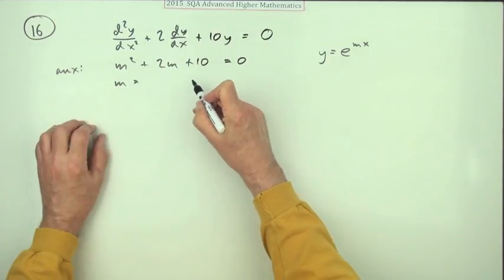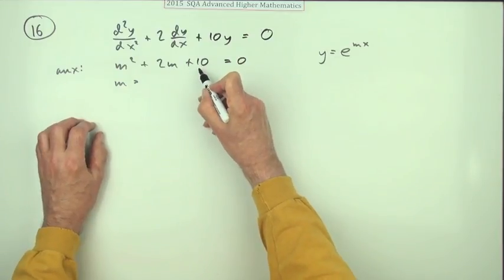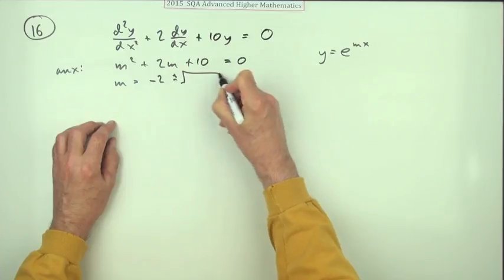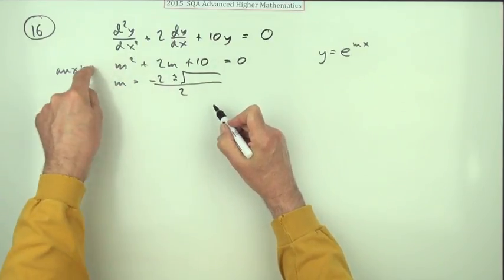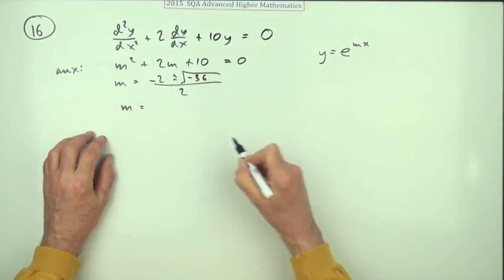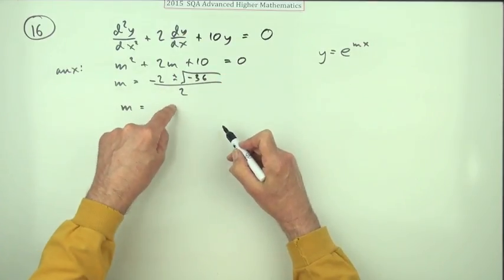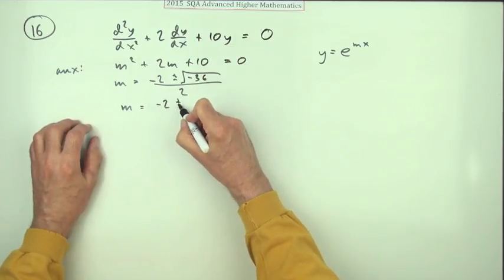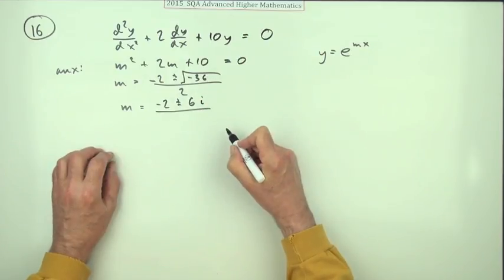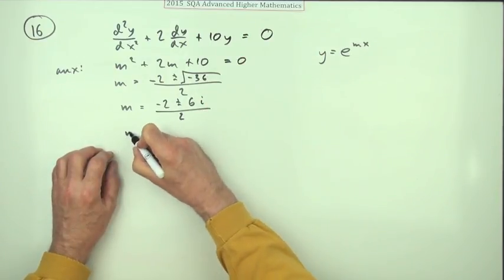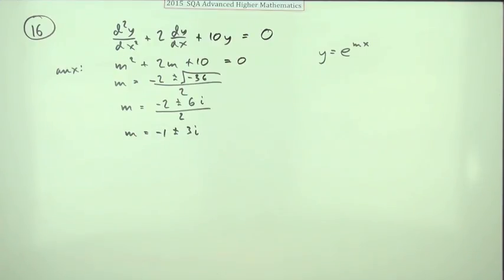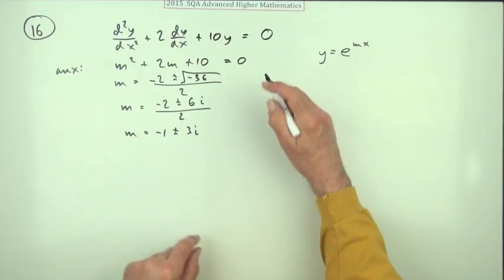So m will be, and you know straight away that's not going to factorize, multiply to give 10 and add to give 2. So it'll be negative 2 plus or minus the square root of 4 minus 40, which is negative 36 over 2. So m is going to be negative 2 over 2, plus or minus 6i, taking the 36 out and leaving the square root of negative 1 upon 2. So m equals negative 1 plus or minus 3i.